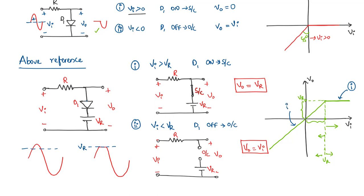You can try analyzing what happens if Vr is negative. Whatever the voltage, anything above Vr is going to get clipped by this circuit. In the next video, we will see below-reference clipping.